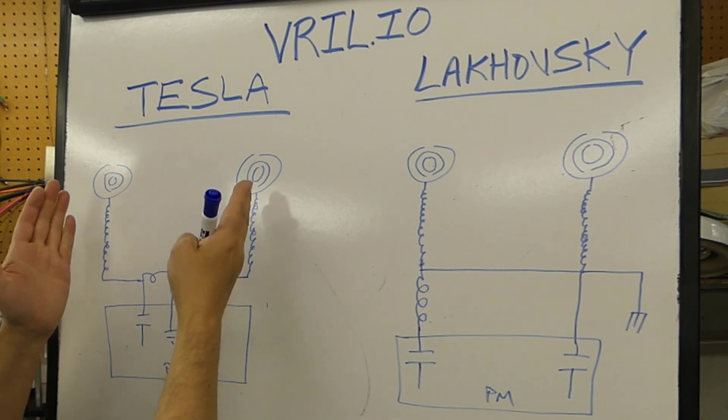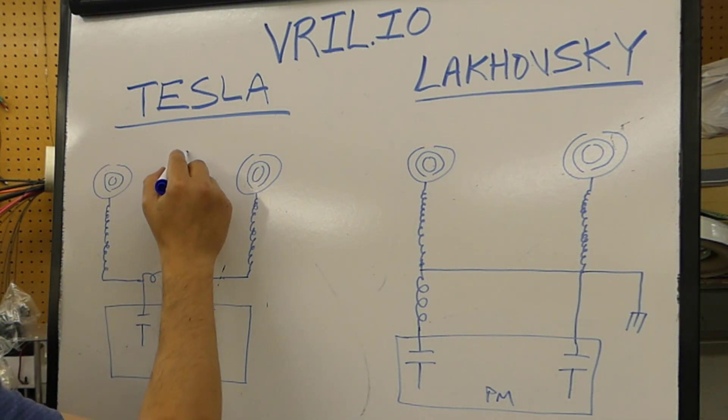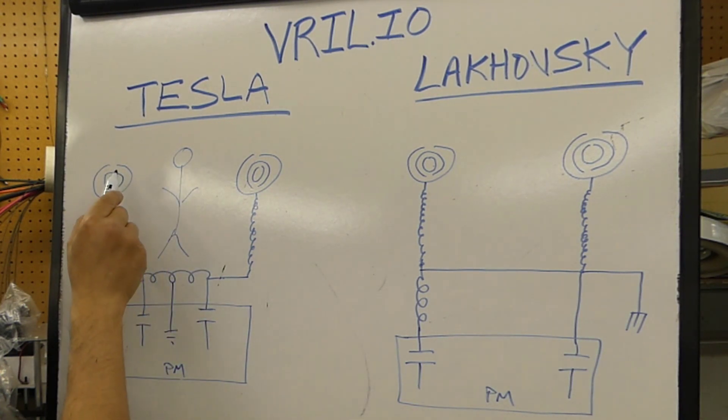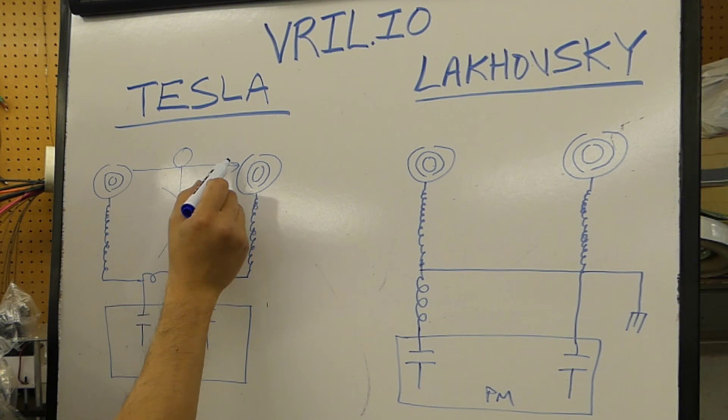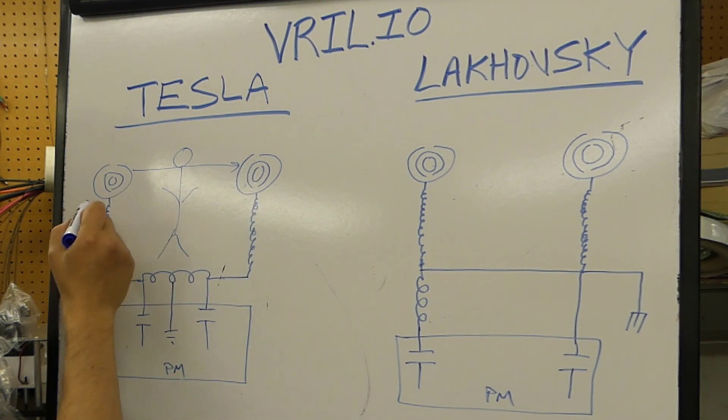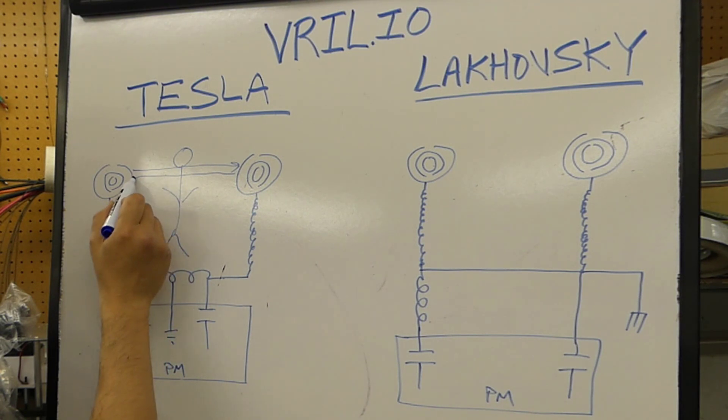This is basically the balanced arrangement. What happens is, if somebody is standing in between here, when this coil fires, these dielectric lines are going to go from here straight over to this antenna, because this is going to close the loop right here. When this one fires in the opposite direction,